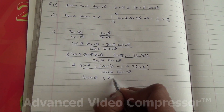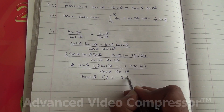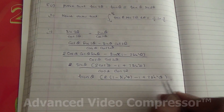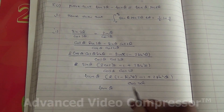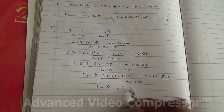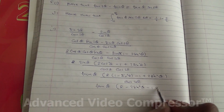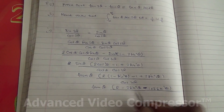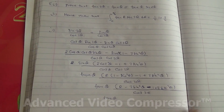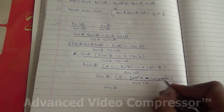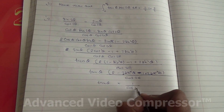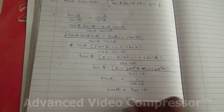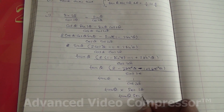So 2 times (1 minus sin²(θ)) minus 1 plus 2sin²(θ), divided by cos(2θ) times tan(θ). 2 times 1 is 2, 2 times minus sin²(θ) is minus 2sin²(θ), minus 1 plus 2sin²(θ), so minus 1 — times 1 over cos(2θ). So tan(θ) times sec(2θ), and therefore it has been proved as required in the question.